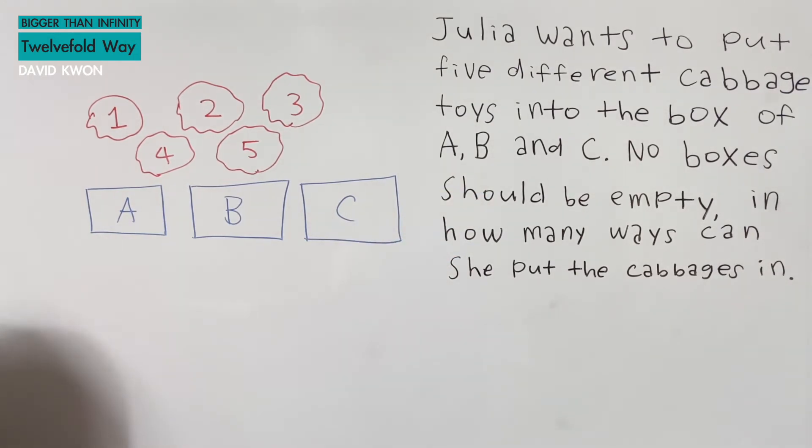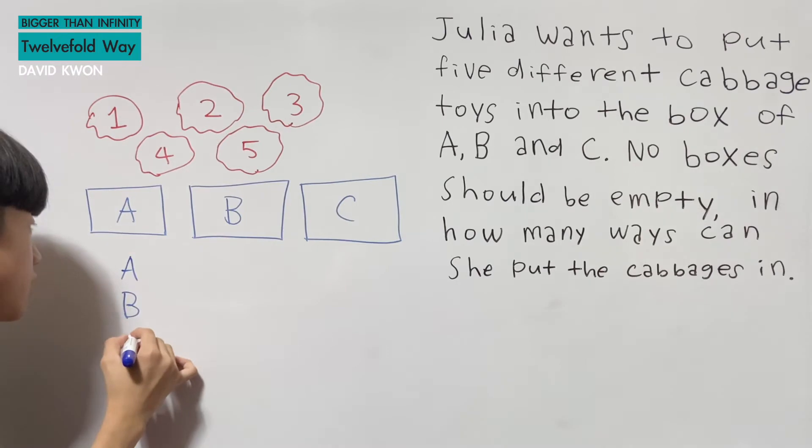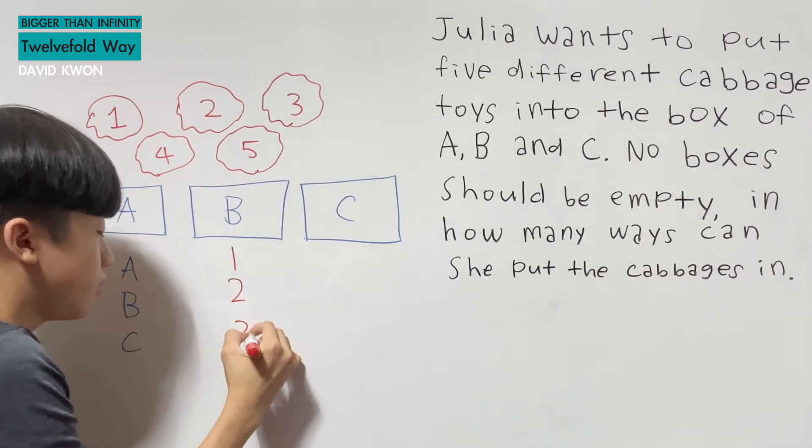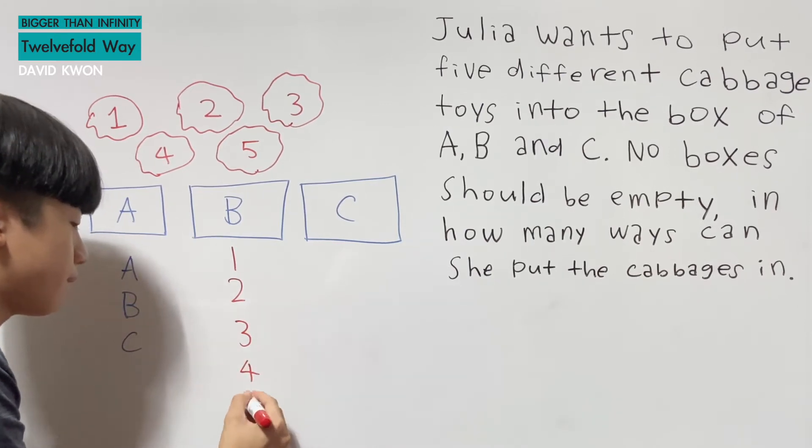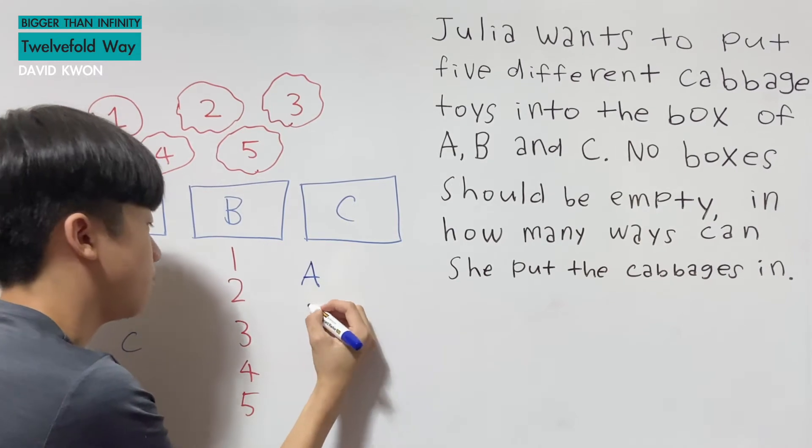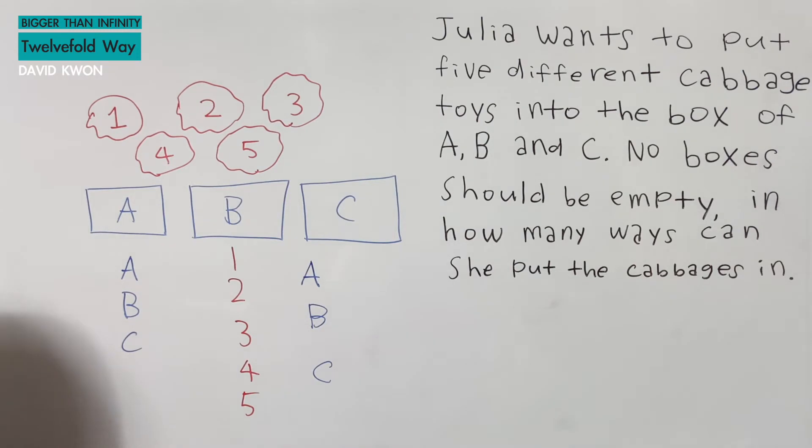So what did I just say? I have all of them, and all of them is the A, B, C, and we have one, two, three, four, five. Okay, so no boxes should be empty. We don't care about that for now. We want the word all, okay?